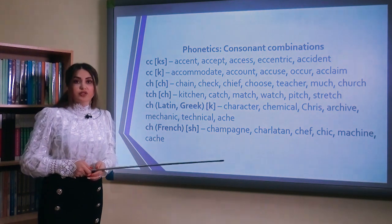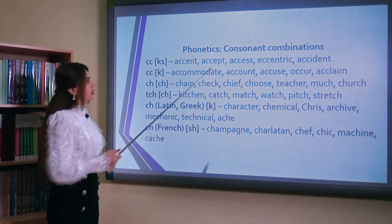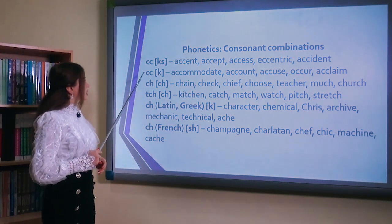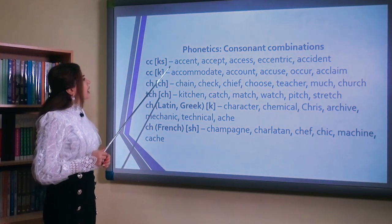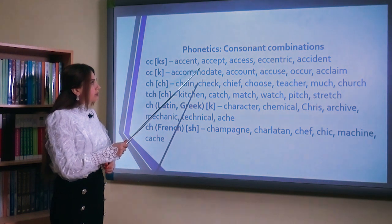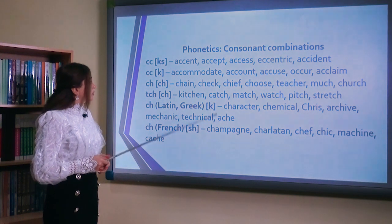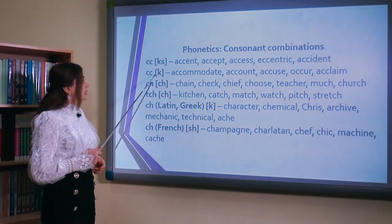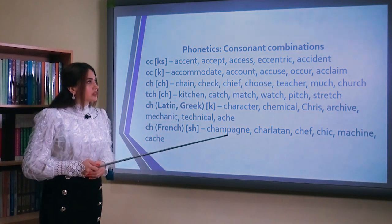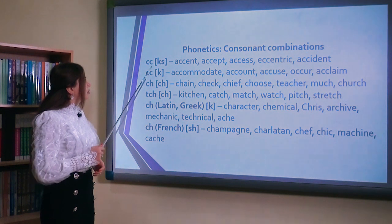Now we come finally to the third section — phonetics. Here we are going to discuss consonant combinations. For example, the consonant combination double-c (cc) can be pronounced as /ks/: accent, accept, access, eccentric, accident. And also as /k/: accommodate, account, accuse, occur, acclaim. Qoşa c samit birləşməsi həm /ks/ (accent), həm də /k/ (accommodation) kimi tələffüz edilə bilər.